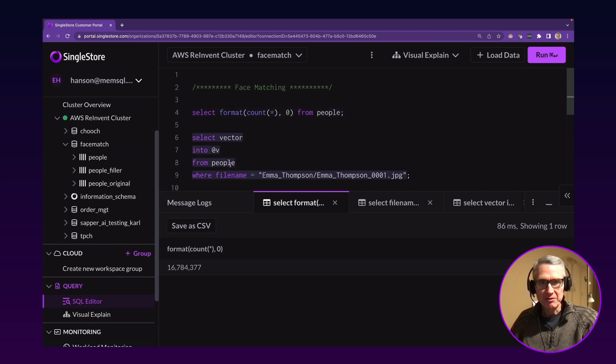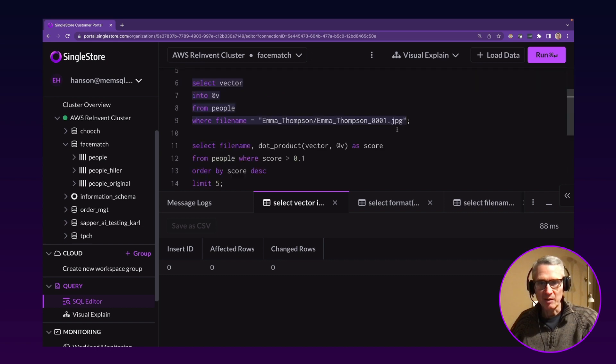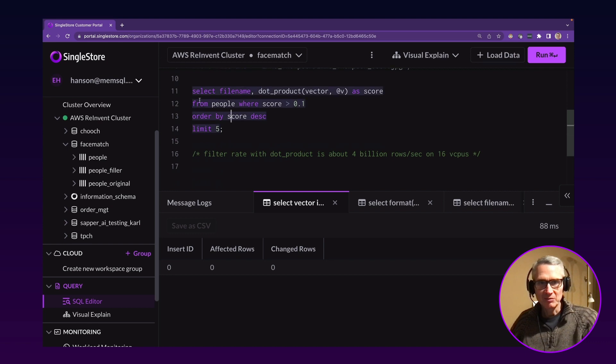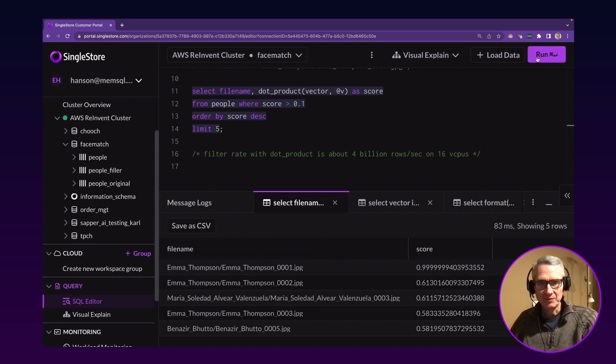So the query vector is going to be at sign V. It's going to represent Emma Thompson number one. That's one of the pictures in the table. So now I want to see the closest matches to that particular photo. And I've got a query here which gets the top five closest matches based on a cosine similarity metric. First of all, did you see how quick that was? It was instantaneous.